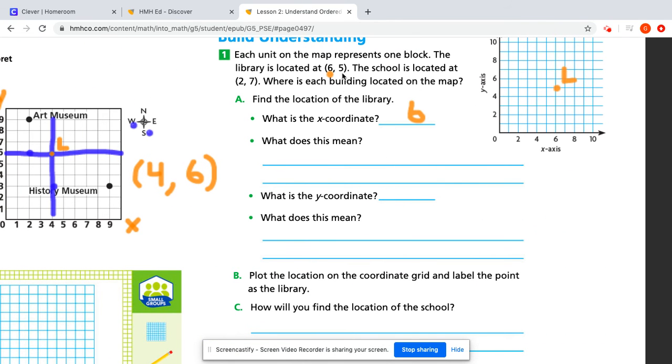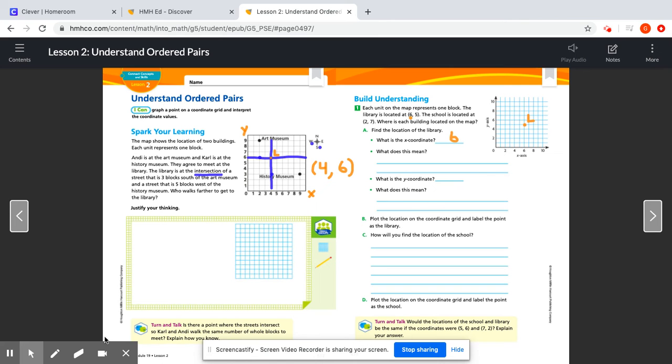So that's what you would write over here on what does that mean. What is the Y coordinate? The Y coordinate is five. So that's what we would say over here. It is five. What does that mean? It means that it is five points away from the X axis.